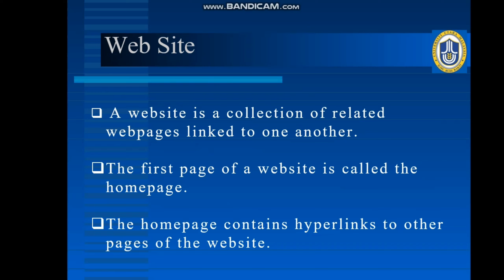Now this website is the collection of all these related webpages that are linked to each other. And we know that whenever we open a website, there will always be a first page, and that first page of that website is known as the homepage. And we see that in the homepage there are multiple pictures, some text, and some links — so by clicking on them, we can directly go to that particular page or window. So that is known as a hyperlink. All of this makes a website. In simple words, a website is nothing but a collection of all these interconnected webpages.